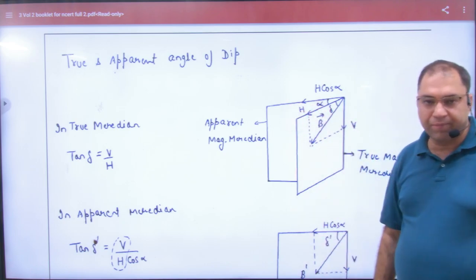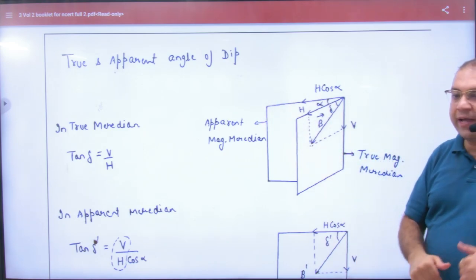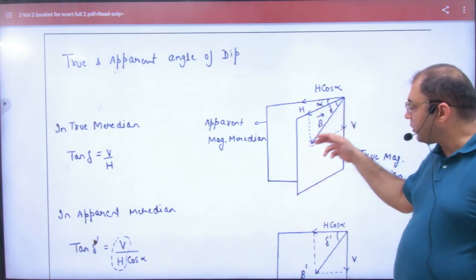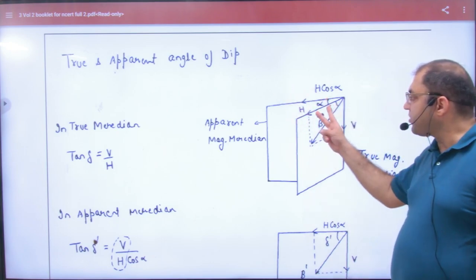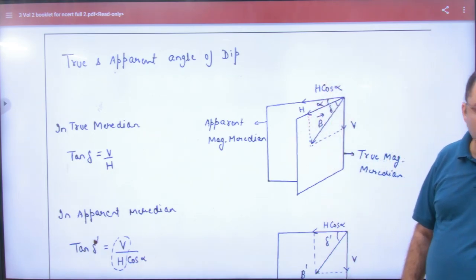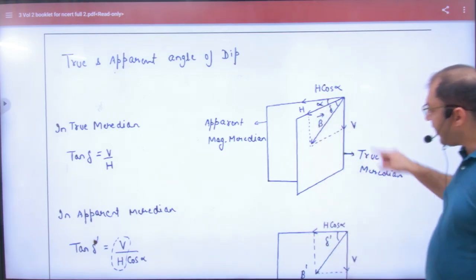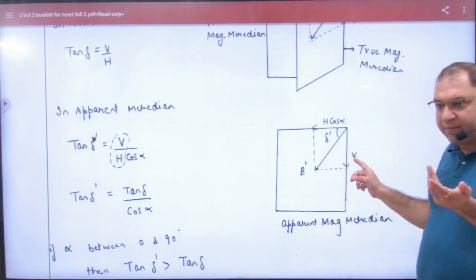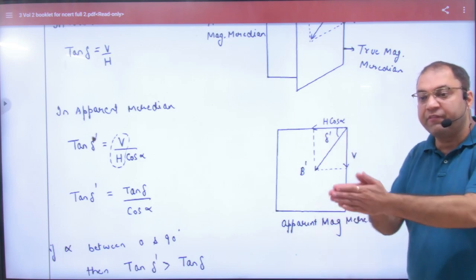And in apparent, then what will happen is the value of H. We will not have to remove because we will remove H true in our true. So what do we do? True meridian and apparent meridian, which of the angles are alpha. We will take this H component on H. What is H? Cos alpha. H cos alpha. Vertical component, both of them is common. It will remain the same. So your diagram is apparent magnetic meridian will be like this. Vertical component is the same, horizontal component is H cos alpha. Alpha is the angle between two meridians.